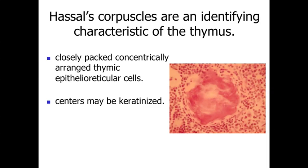One of the identifying characteristics for the thymus is the presence of what are referred to as either thymic corpuscles or Hassall's corpuscles. These are a concentric structure of thymic epithelial reticular cells that come together, cluster together, and in many cases may become keratinized. You start to see these accumulate especially in the adult thymus and at later stages of life, and it may represent a less active form of these epithelial reticular cells.